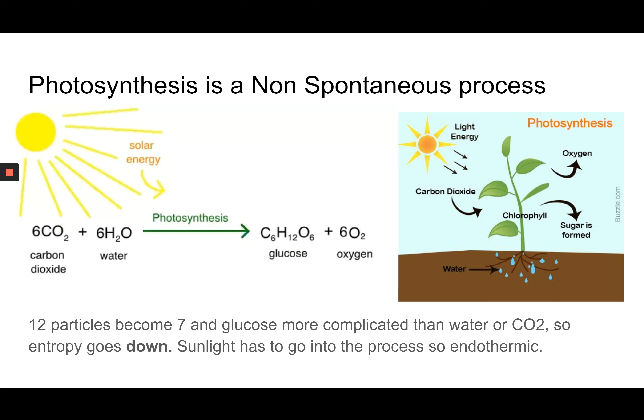So in the process of photosynthesis, carbon dioxide and water combine to create glucose, which is a kind of sugar, and oxygen.